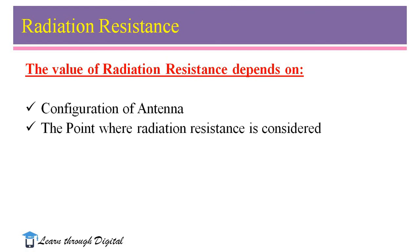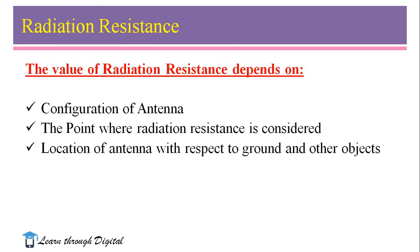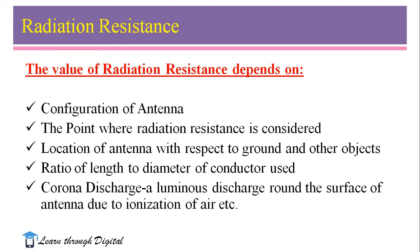First one is configuration of antenna. Second one is the point where radiation resistance is considered. Third one is location of antenna with respect to ground and other objects. Fourth one is ratio of length to diameter of conductor used.